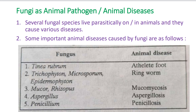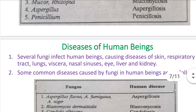Some important animal diseases caused by fungi are as follows. This table gives five examples: Tinea rubrum causes athlete's foot disease; Trichophyton, Microsporum, and Epidermophyton cause ringworm disease; Mucor/Rhizopus causes Mucormycosis; Aspergillus and Penicillium cause Aspergillosis and Penicilliosis. Animals are very important to us, and when they suffer from these diseases, it is troublesome to human beings as well.